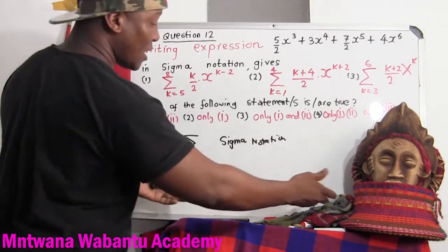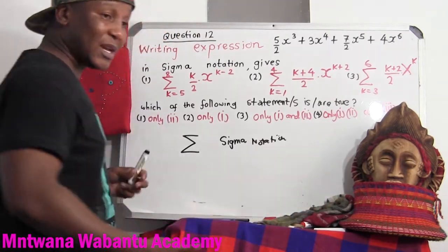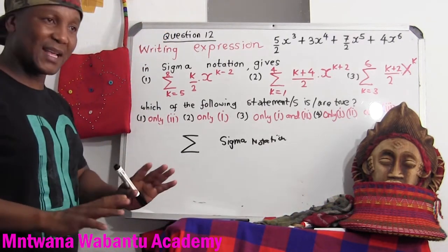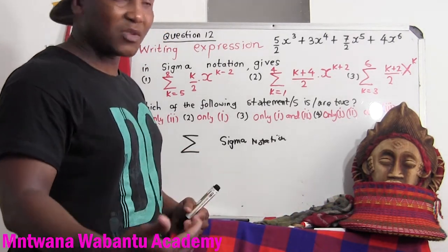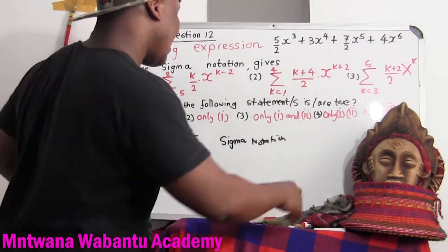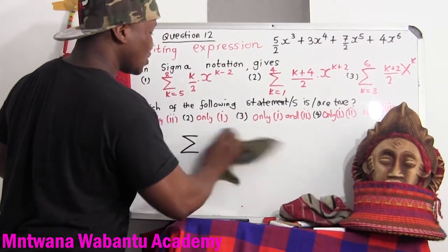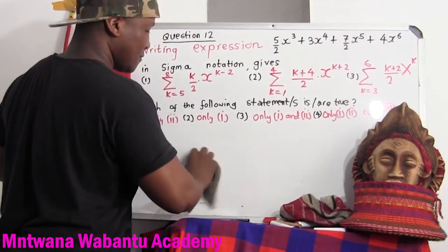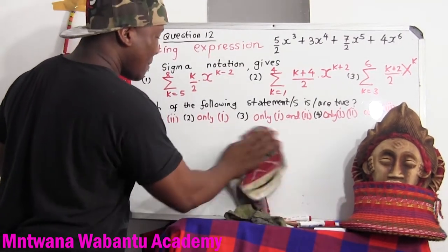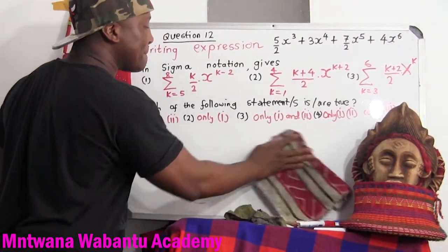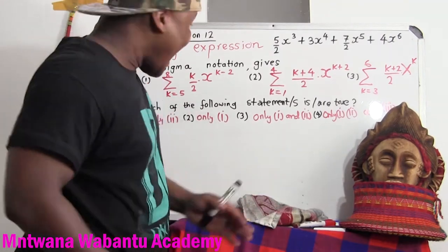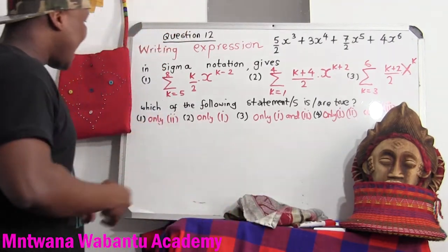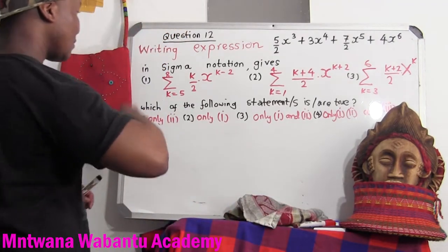I want to touch the links here where you can learn more easily and see more examples of sigma notation. Now let's go for this question — it's very easy. Sigma means sum, means add it, continue adding.